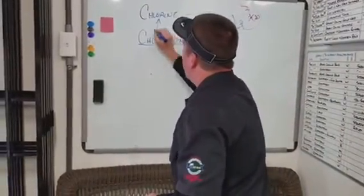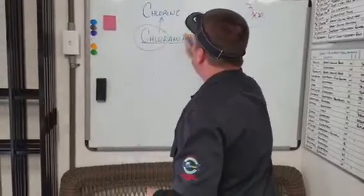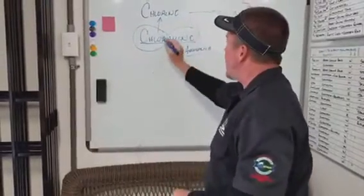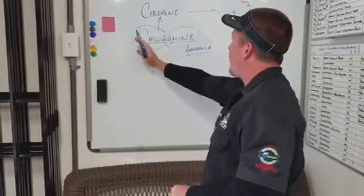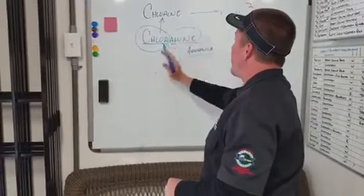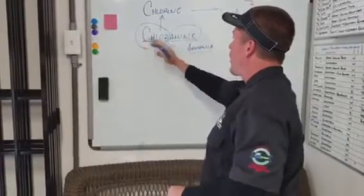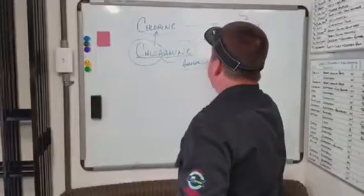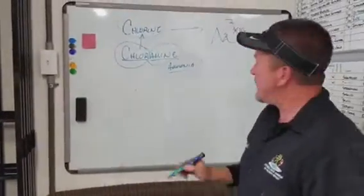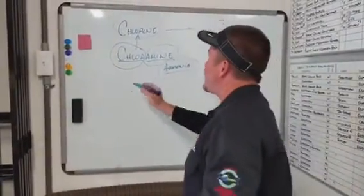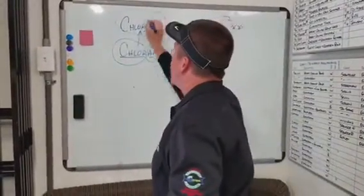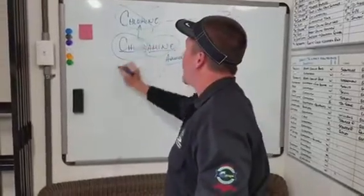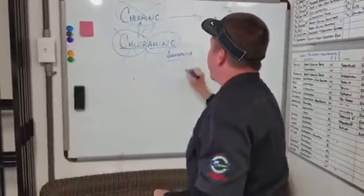The chloramine is broken apart into its two separate entities. Now you've separated the chlorine from the ammonia — it's no longer chloramine, it's just chlorine and ammonia. Your pond detoxifier detoxifies the chlorine from breaking apart the chloramine, so now the chlorine is gone.